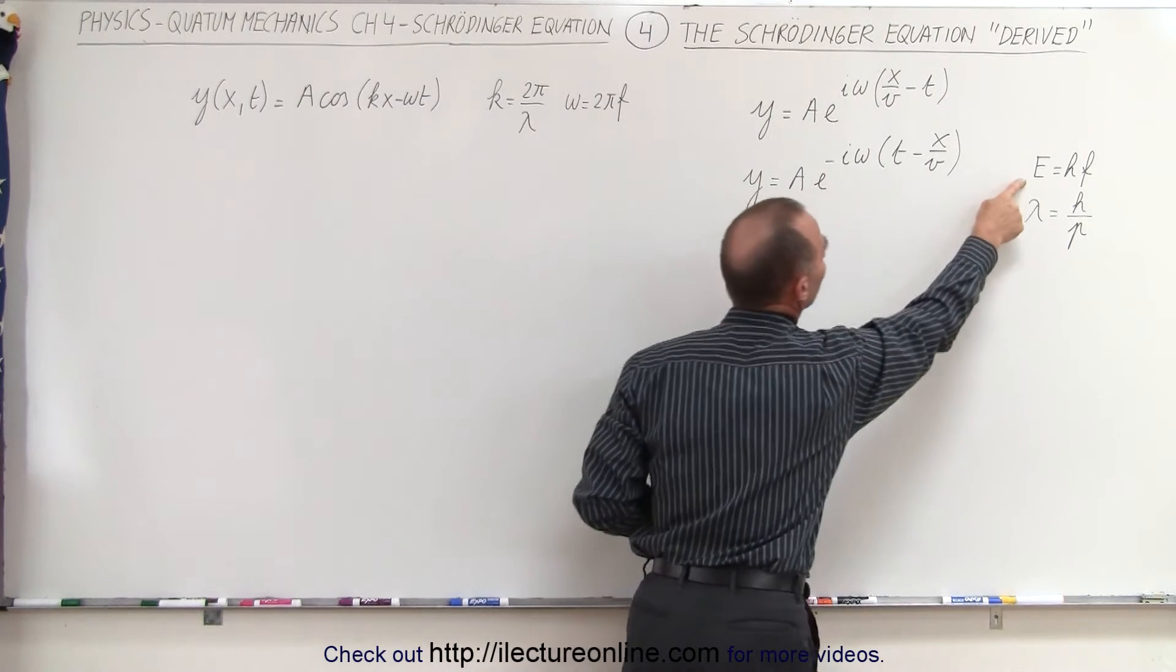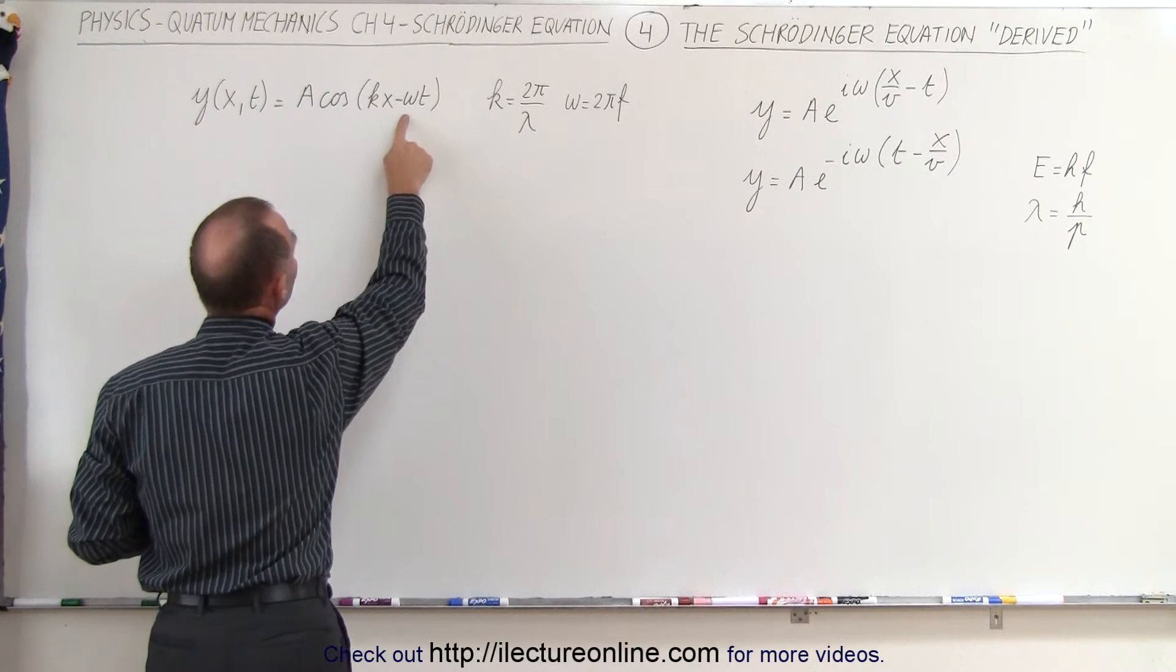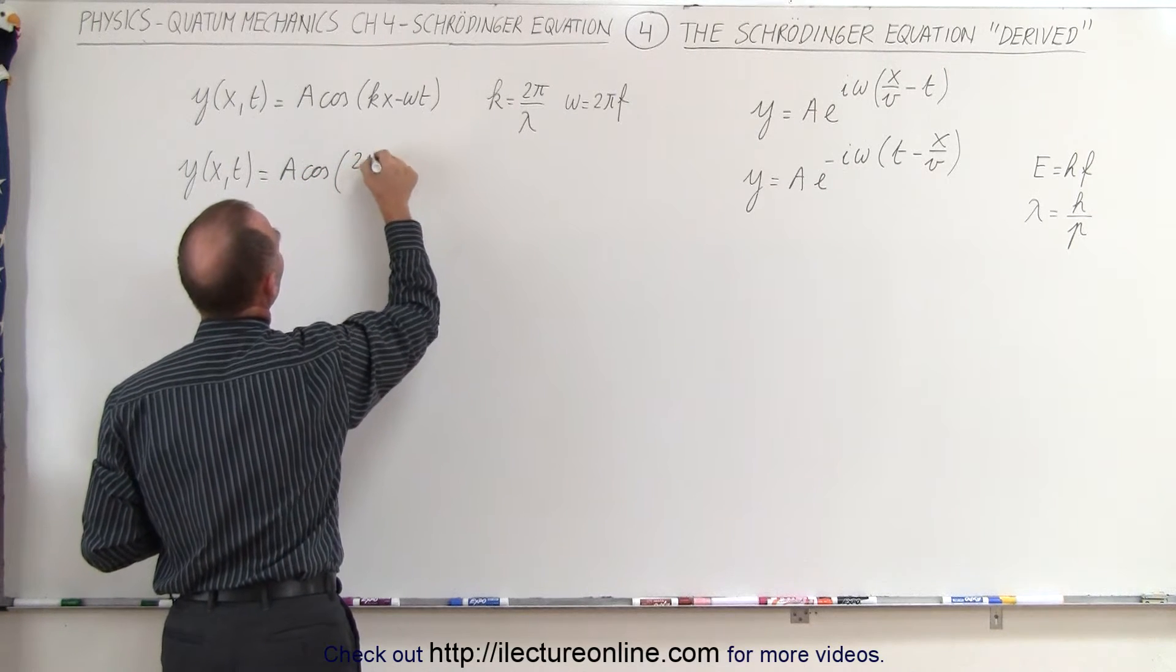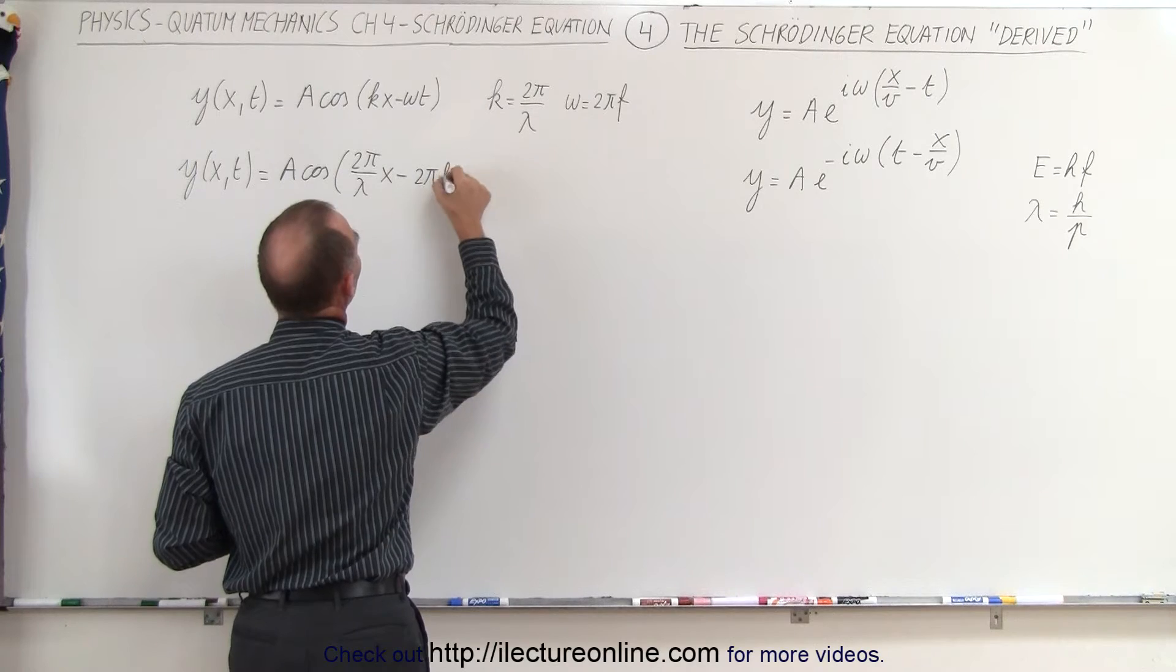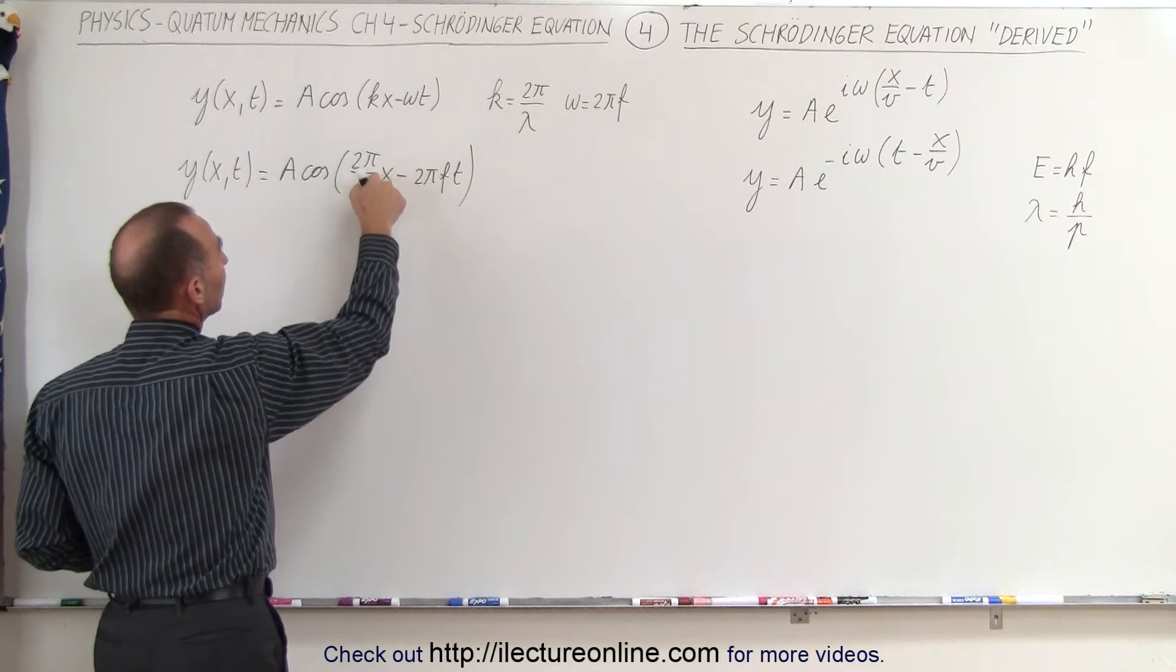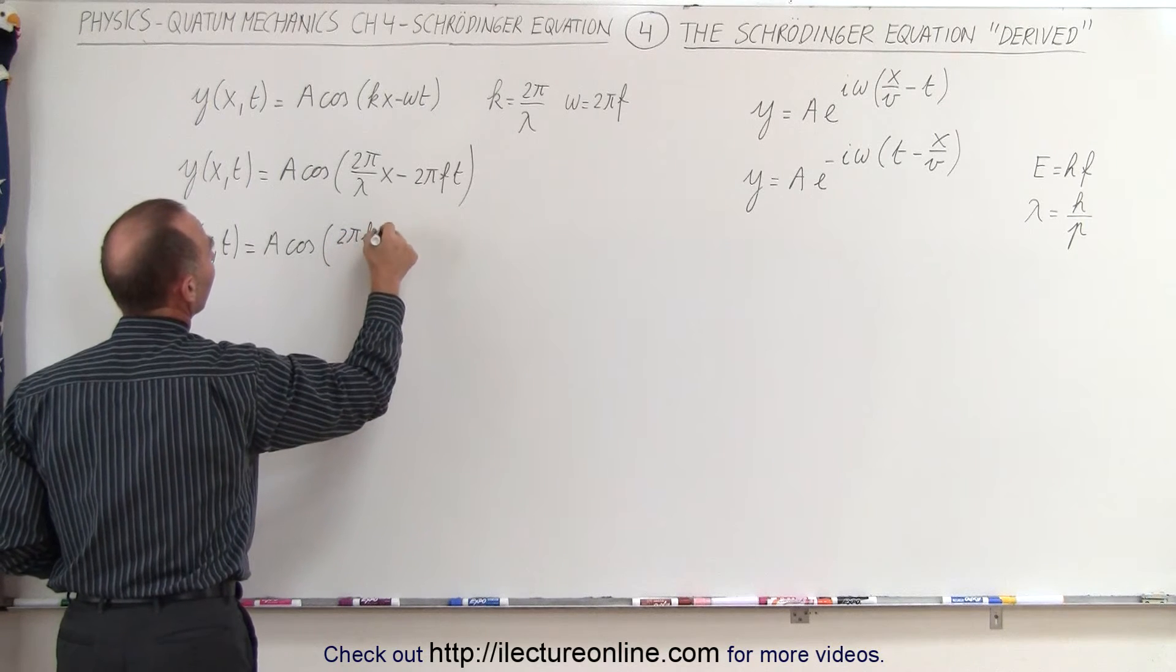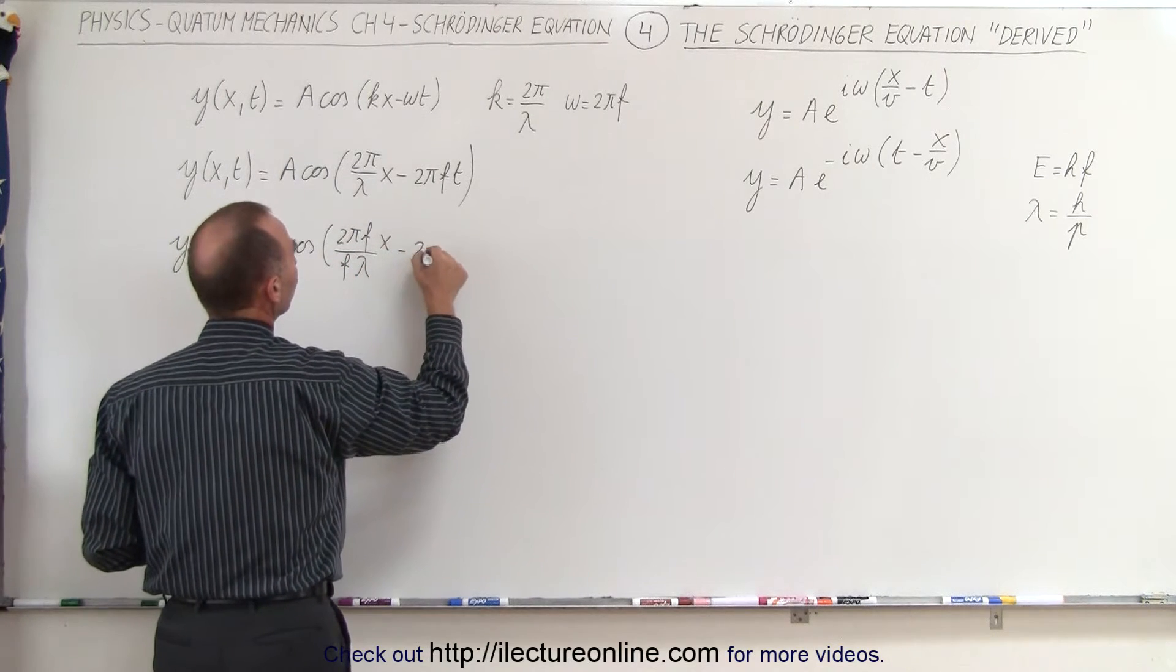First, let's replace k and omega by what they're equal to. So we can write that y is a function of x and t, written as A times the cosine of, instead of k we write 2π over λ times x, minus omega which can be written as 2πf times t. Next, we're going to multiply both the numerator and denominator here by f. Let's see what we get. Y of x and t is equal to A times the cosine of 2πfx over fλ, so I multiply both the top and the bottom by f, which is fine, minus 2πft.